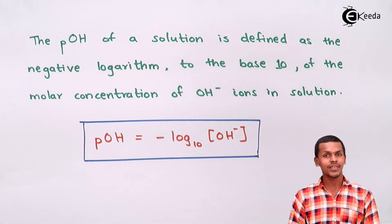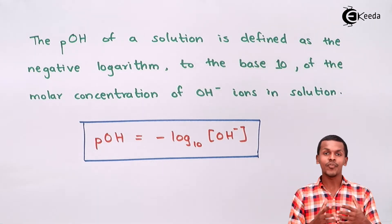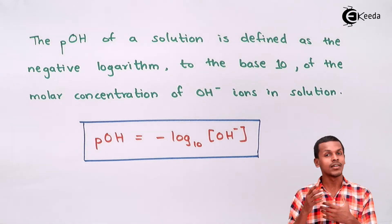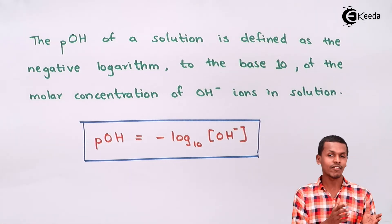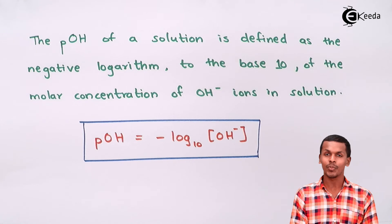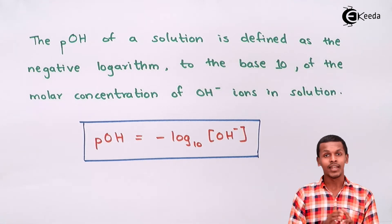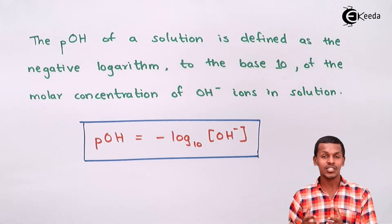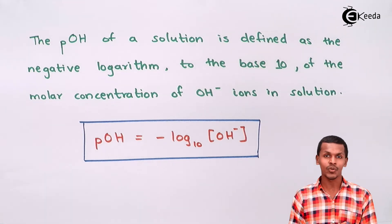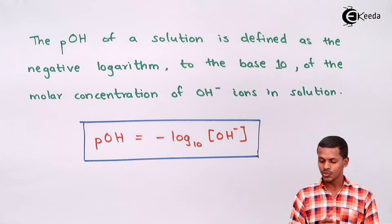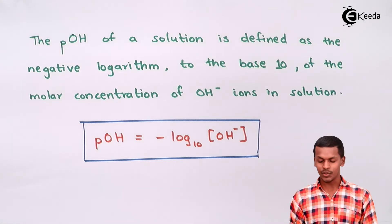We will also get to know that if the value of pH is between 0 and 7, then that kind of solution will be called an acid. While if the pH is between 7 and 14, then that kind of solution will be called a base.